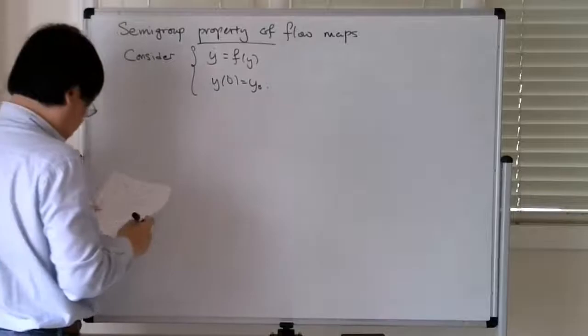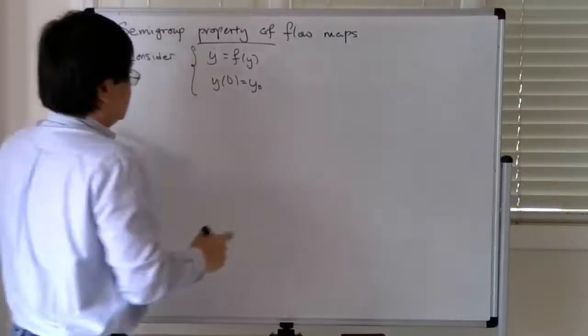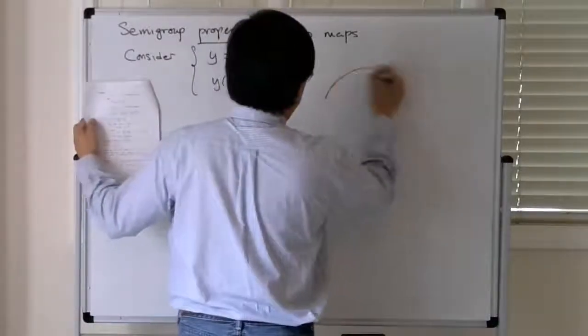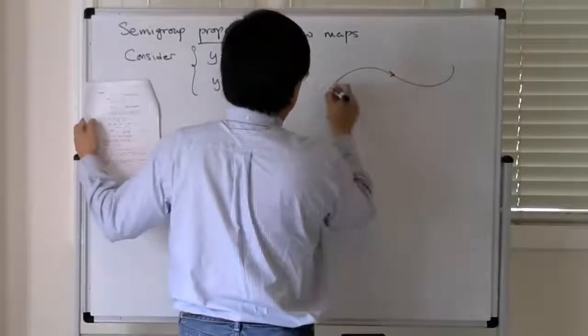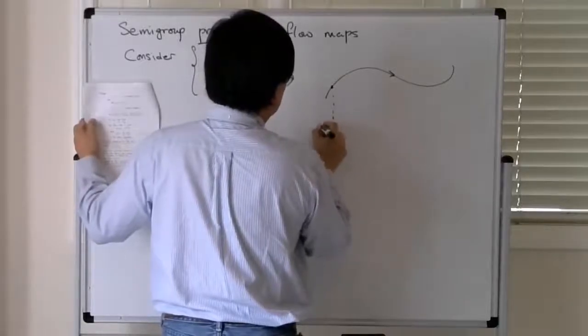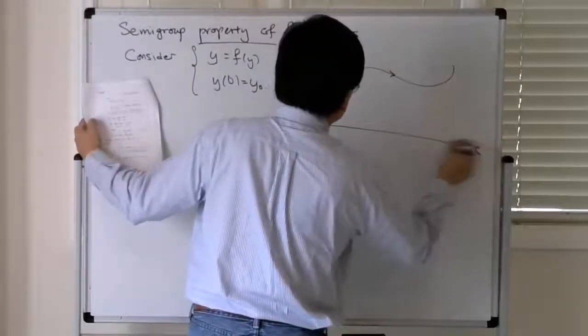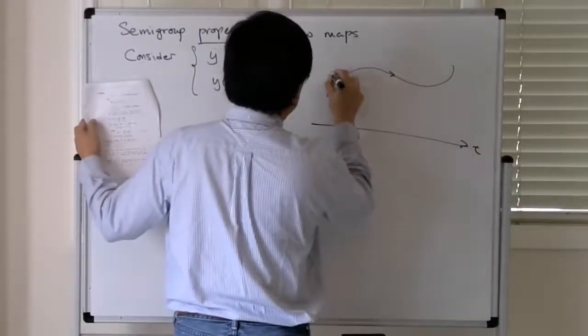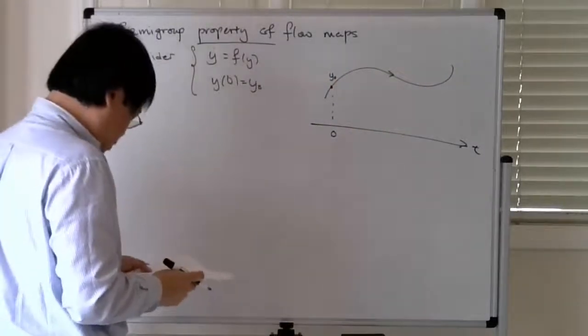And so you have some solution curve and you have initial data at time—let's say this is time t equals 0—this is y0.